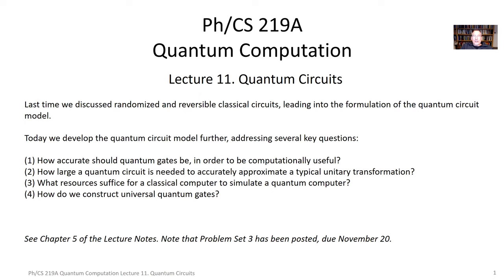Today I want to address some basic questions about the quantum circuit model of computation. For one thing, we know quantum gates being unitary transformations live in a continuum, and we'd like to understand — if we're experimental physicists or computer engineers — just how accurately the gates in our hardware need to approximate the ideal gates in some quantum circuit of interest in order to give us computationally useful results.